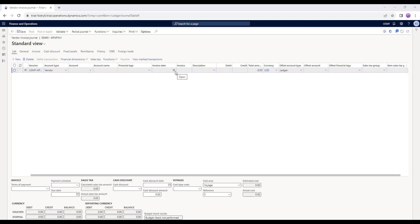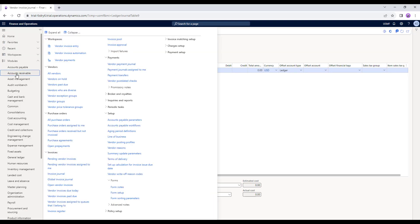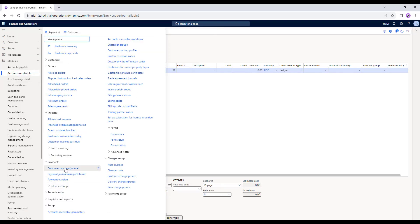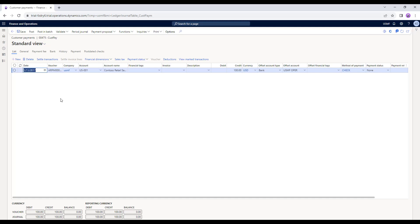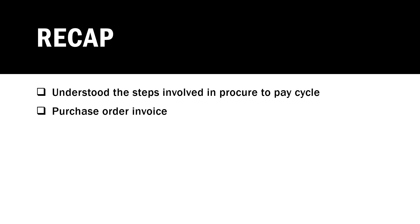Similarly, if you need to receive payments from customers, going to Accounts Receivable and then Payments, you'll find the Customer Payment Journal — this is where you process all payments to be received from customers. To recap: you should now understand the steps in the Procure to Pay cycle. Invoices related to purchase orders are processed from the purchase order form, while invoices not related to purchase orders — non-purchase order invoices — are processed using journals.